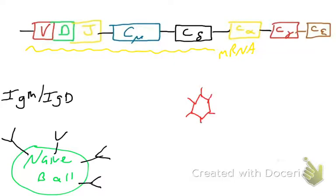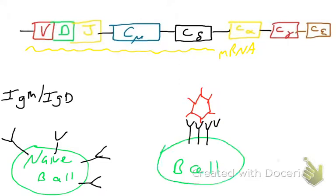Let's say there's an infection that this naive B cell happens to recognize. It has an antigen binding site with a variable region that binds this antigen — some protein or molecule present on the surface of this pathogen. What's going to happen is the B cell will go from being a naive B cell to an activated B cell. This process is covered later in chapter 9, but I want to focus on how this B cell secretes antibody.